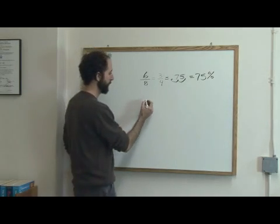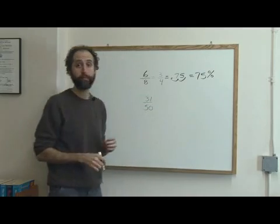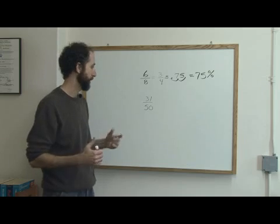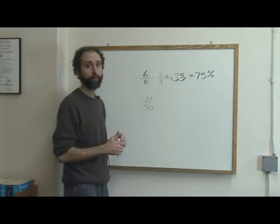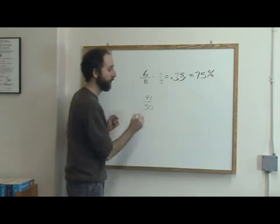Let's take a look at one more. Let's say you got 31 out of 50. That's a score that a teacher might give you on a quiz or test. You'd want to know what score that is. Actually let's make it a little better because that wouldn't be a great score. Let's use 41 out of 50.